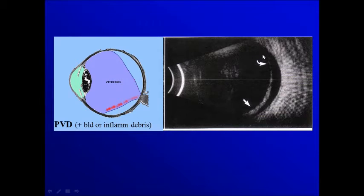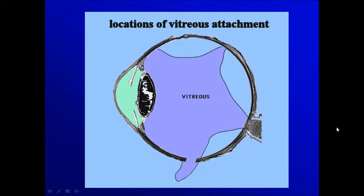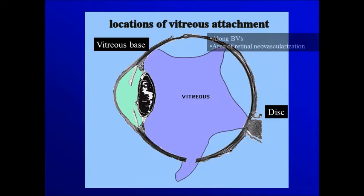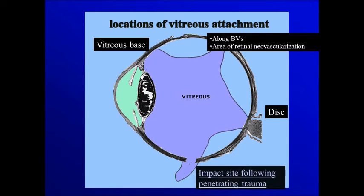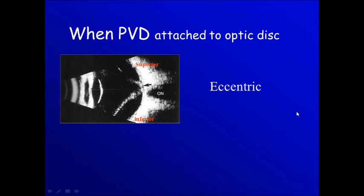If you compare the lower part with the upper part — normally we have points of attachment between the vitreous and the wall. These are at the disc area, at the vitreous base, along the blood vessels, or in areas of neovascularization, and following a site of perforation to the walls.